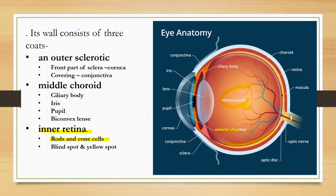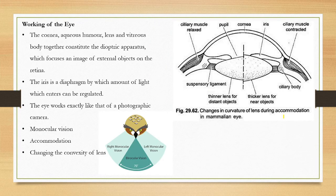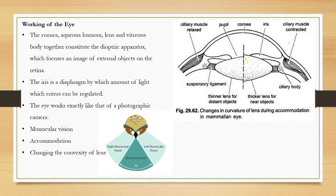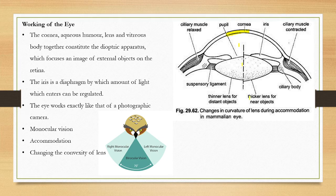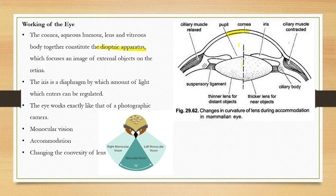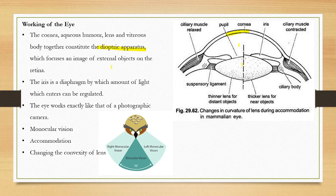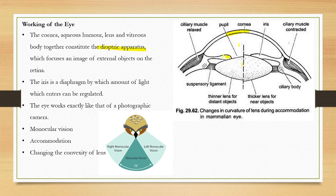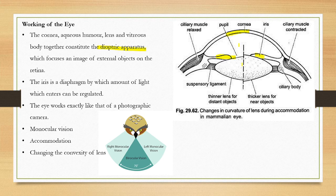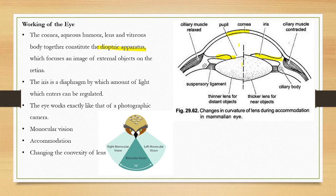Now how does it work? The cornea, aqueous humor, lens, and vitreous humor together constitute a dioptric apparatus which focuses an image of external objects on the retina. The iris is a diaphragm by which the amount of light which enters can be regulated.